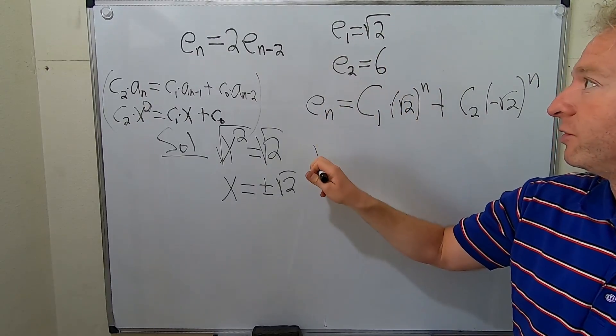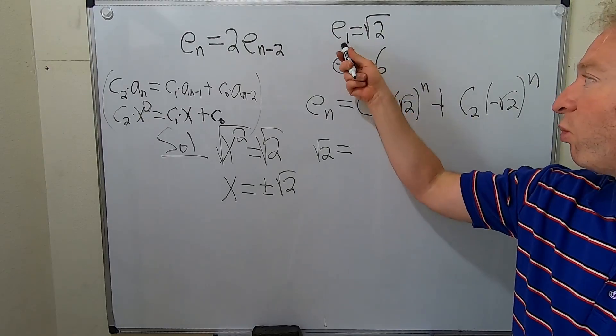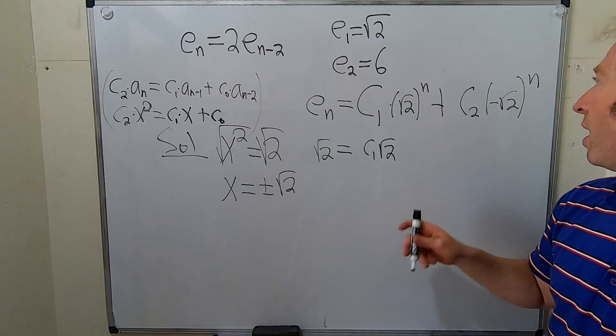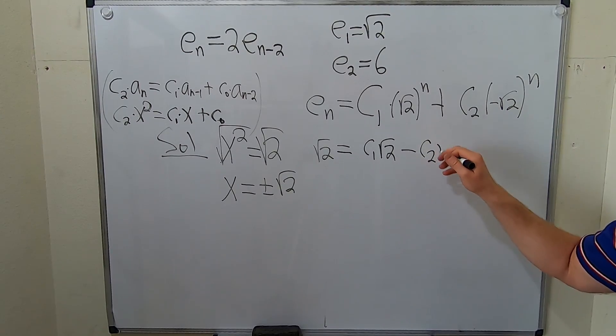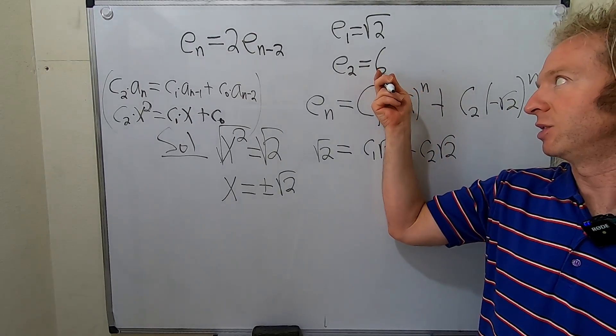So E1. So I'm going to put the square root of 2 here. And then n is 1. So it'll be C1 square root of 2. Oh, this is interesting. Minus C2 square root of 2, right? Because you put a 1 here, the negative, you can pull it out. All right, let's use the second condition now.